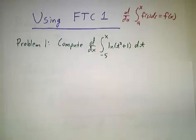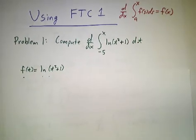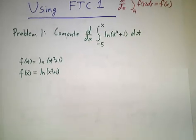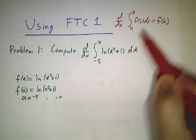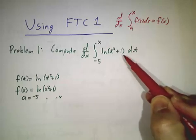But this problem is easy because it fits right into the fundamental theorem. f(t) is ln(t^2+1), f(x) is ln(x^2+1), and a is negative 5. The only difference between this problem and this problem is that here we call the variable s and here we call the variable t. Other than that, they're identical.